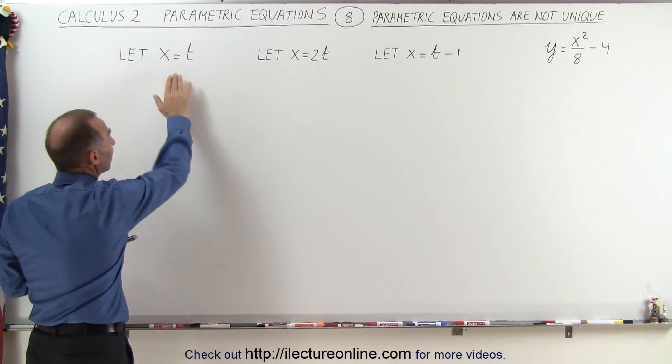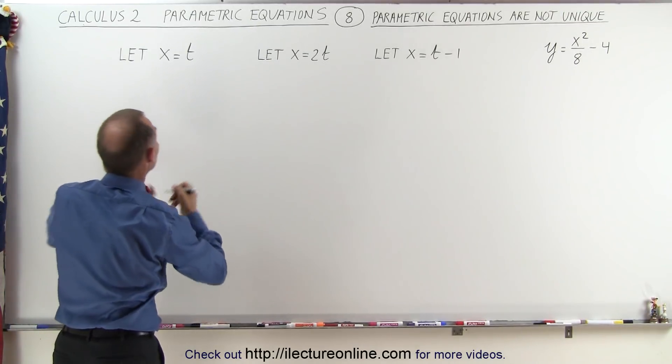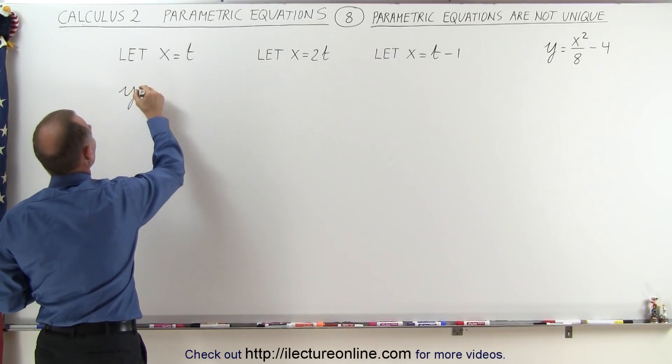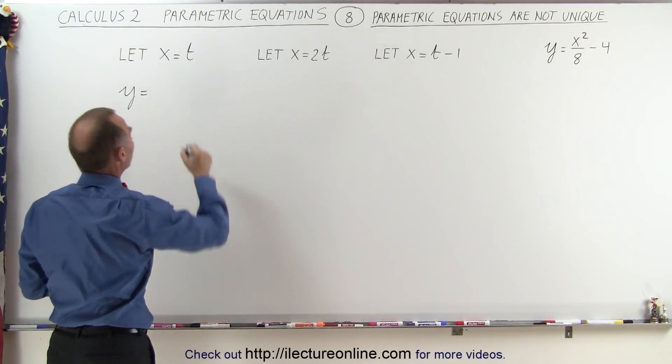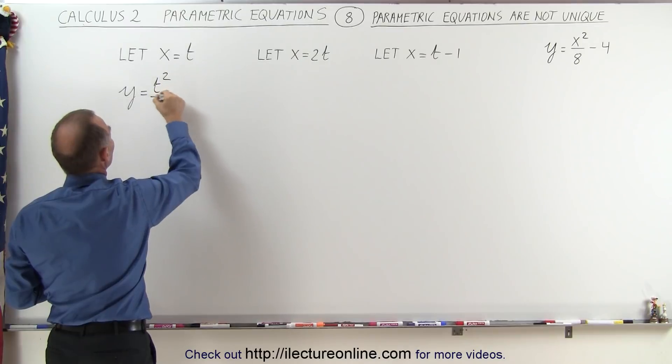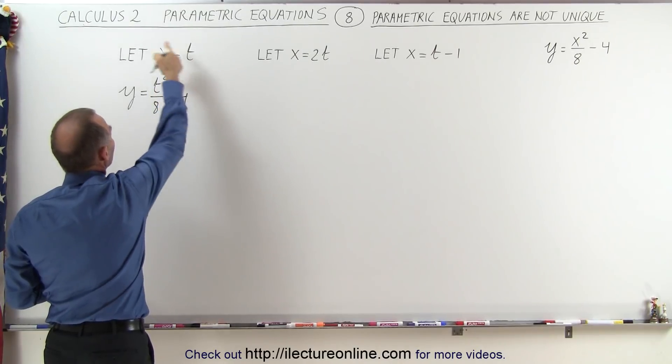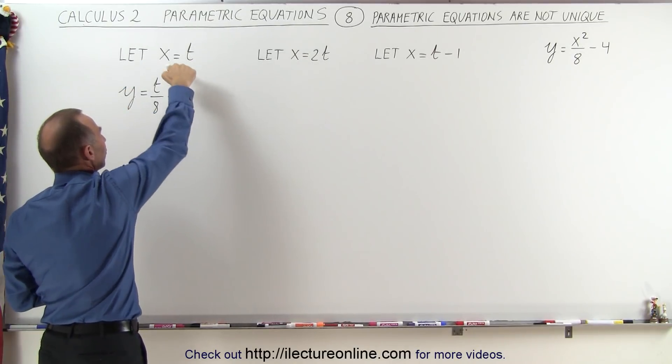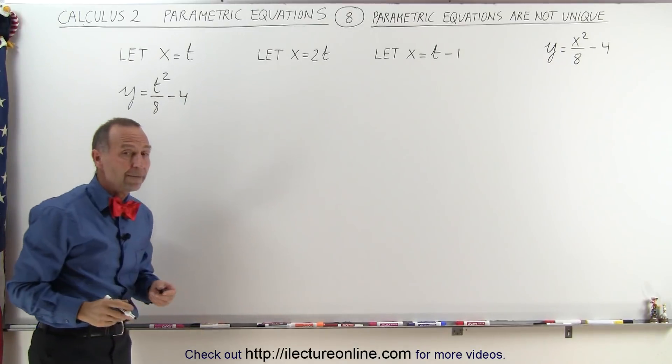Starting with x = t, we're going to take our equation and replace every x by t, so this becomes y = t²/8 - 4, and this gives you the set of parametric equations when you start with x = t.